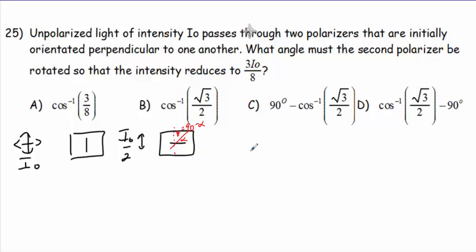And the intensity coming out on this side would be the intensity in the middle, I-naught over 2, times the cos squared of 90 degrees minus alpha.